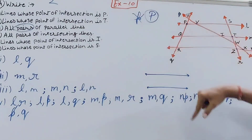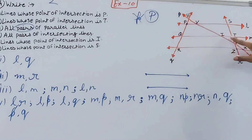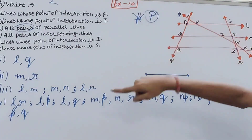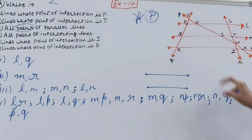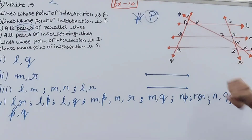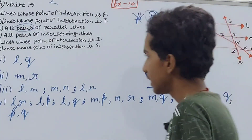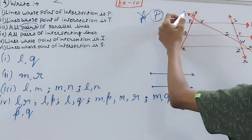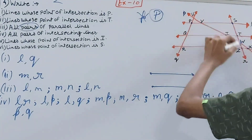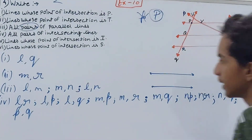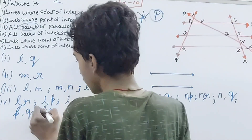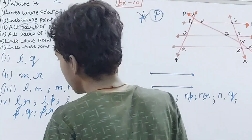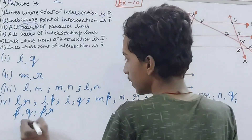Confirming all pairs are covered: l and p done, m and p done, n and p done, l and r done, and p and r at point Z. That completes all pairs of intersecting lines.